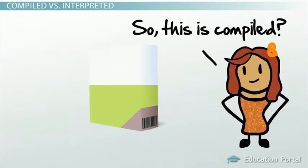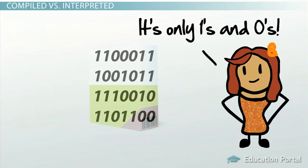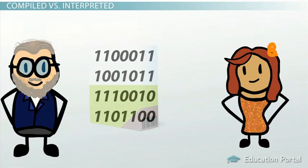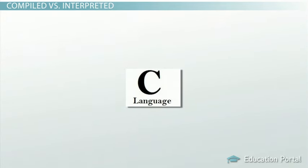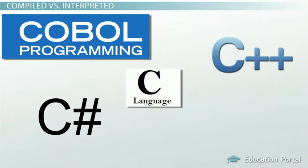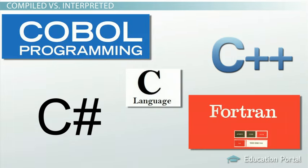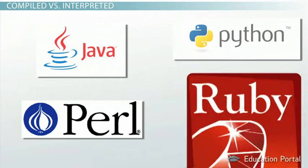This makes it possible to distribute a program without revealing its inner workings. When you install a software application on your computer, you are typically installing a compiled version of the code. You can run the software application, but you can't open up the source code in the original programming language. For many companies selling software applications, the original source code is a well-kept secret and gives them their competitive advantage. Examples of compiled languages include C, C++, C Sharp, COBOL, and Fortran. Examples of interpreted languages are Java, Perl, Python, and Ruby.